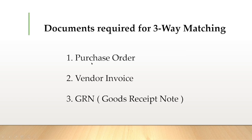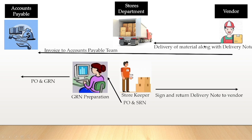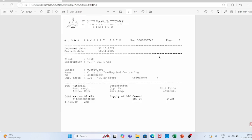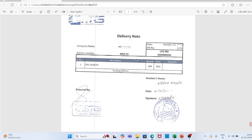Three-way matching: the documents required are the purchase order, vendor invoice, and GRN (goods receipt note). The vendor delivers material to stores with a delivery note showing item, unit, and quantity. The storekeeper physically counts, certifies the delivery note by signing, and prepares an SRN. The warehouse team then prepares the GRN based on the storekeeper's SRN and a copy of the vendor's delivery note, and submits it along with the purchase order to the accounts payable team. The GRN contains GRN number, document date, plant, vendor number and name, purchase order number, purchase group, and item details: description (supply of OPC cement), 100 units, unit price 14.25, GRN value 14.25.